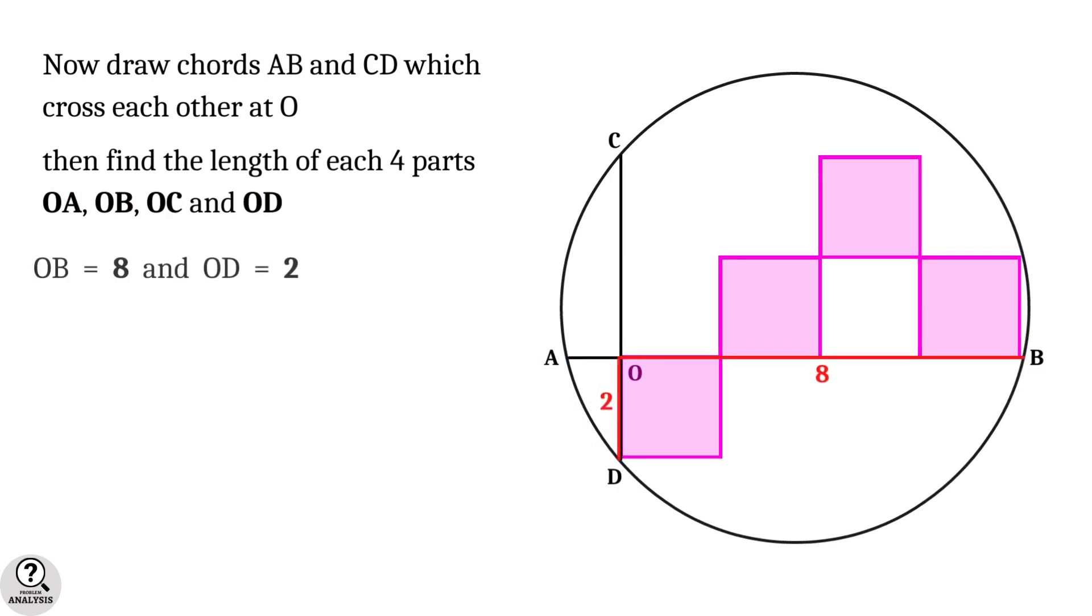Clearly, OB equals 8 and OD equals 2, because we have the side length of each square is 2 units.